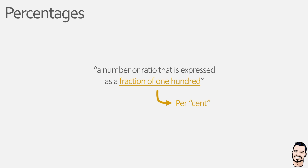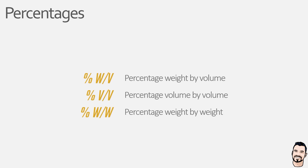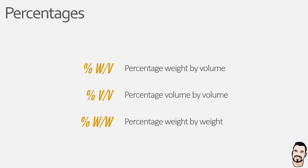Now there are three main ways in which we can express percentages depending on what we are looking at. We have percentage weight by volume, percentage volume by volume, and percentage weight by weight, all of which are very different and have specific use cases. Our percentage weight by volume measure is for mass concentration — the ratio of solute weight to the solution volume — and is commonly used when a solid solute is added to a liquid solvent.